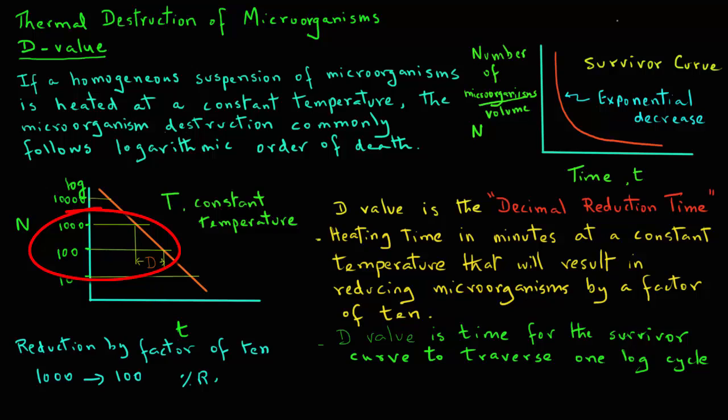If we wanted to know the percent reduction in microorganisms during one log cycle, we can take one thousand minus one hundred, that is the decrease during that one log cycle, divided by the initial number of microorganisms. We had one thousand at the start of that log cycle, times hundred, and that gives us nine hundred over thousand, into hundred, or ninety percent.